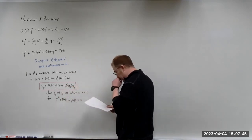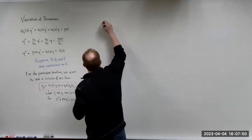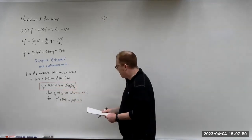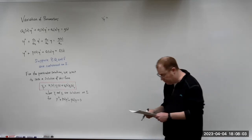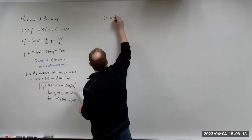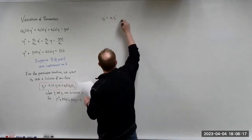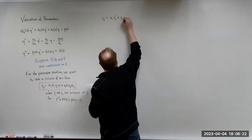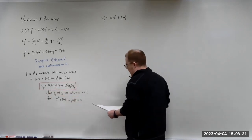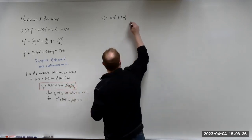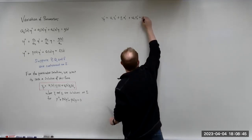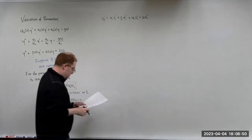Here's the form we have. We're going to take the derivative with respect to X, omitting the X values for brevity. Y prime is going to be: U1 times Y1 prime plus Y1 times U1 prime — using the product rule on the first term — plus U2 times Y2 prime plus Y2 times U2 prime.